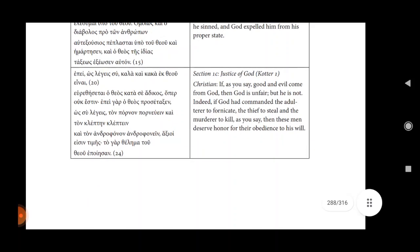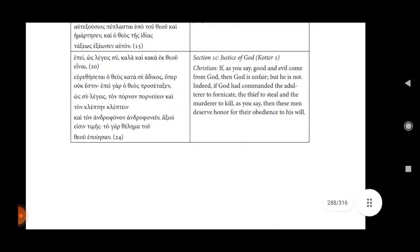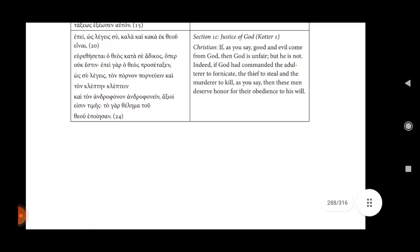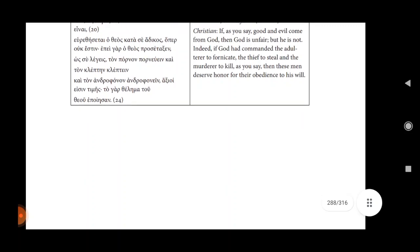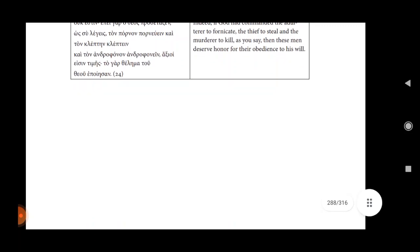Section 1c, Justice of God. Quotar one: If, as you say, good and evil come from God, then God is unfair, but he is not. Indeed, if God has commanded the adulterer to fornicate, the thief to steal, and the murderer to kill, as you say, then this man deserves honor for his obedience to his will.